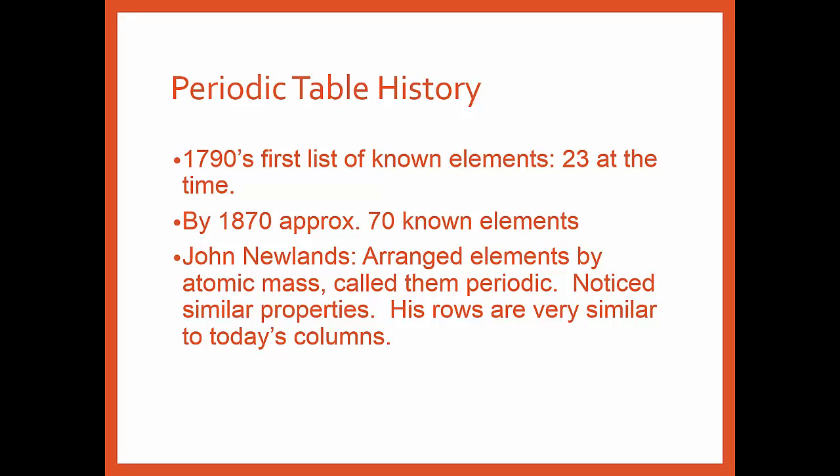John Newlands, he's the very first to start arranging them, and he arranged them by atomic mass. We know today we don't use atomic mass, we use atomic number. But even by arranging them by atomic mass, he started to see some properties. He's the very first that used the word periodic, meaning they arranged in periods that you started to see some patterns. His patterns, if you looked at his rows, would actually be very similar to our columns that we have today.